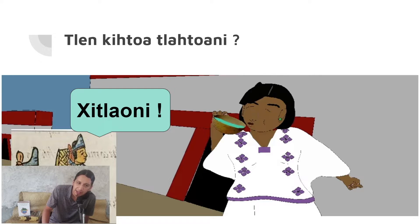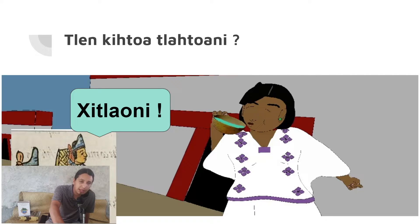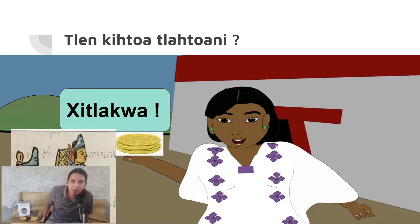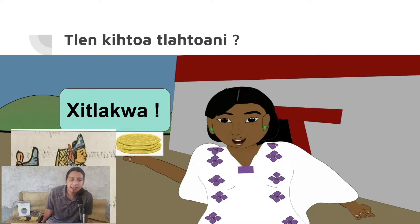Ni tla'oni means 'I am drinking,' but shi tla'oni means 'I'm telling you to do it — drink.' He also says 'shi tlakwa' — eat. It sounds like a command, and some people call it the imperative, but it's not necessarily rude. That's just how you tell someone to do something. There's no word for 'please' in Nahuatl — you just say the action. People can tell if you're being nice from your intonation, context, and facial expressions.